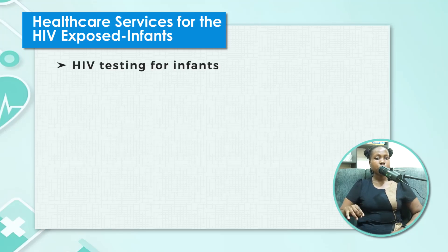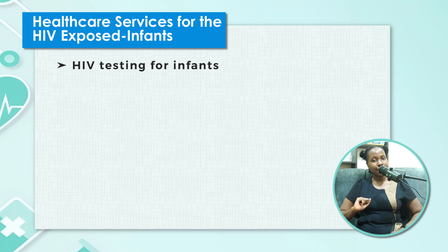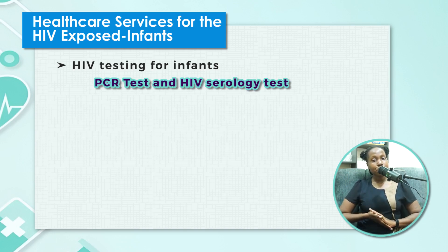While they are on ART, we take a blood sample for PCR to find out the final results regarding the child's HIV status. Along the way, as these children are on different medications, we take different blood samples to know their HIV status. We do PCR tests and also an HIV serology test. With HIV testing, we do DNA-PCR and serology at given stages of the child's life.